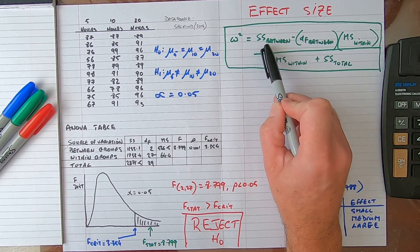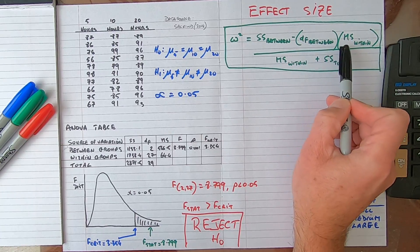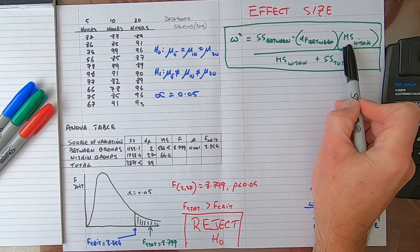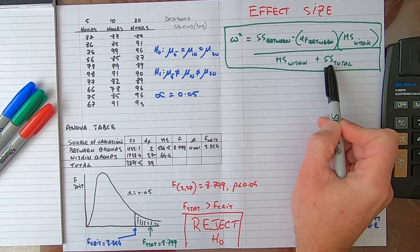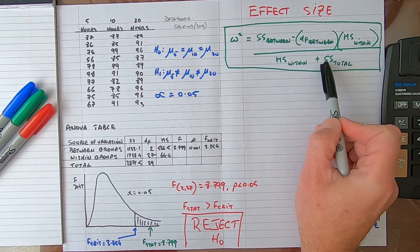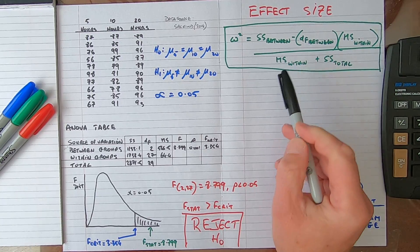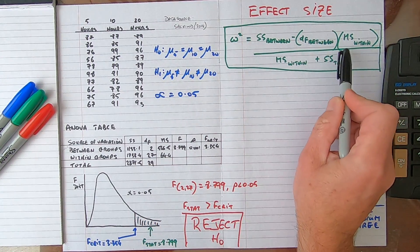The formula for calculating omega squared is a little bit of a mouthful but let's go through it. It's equal to the sum of squares between minus the degrees of freedom between multiplied by the mean square within, that's all divided by the mean square within again plus the sum of squares total. That is a bit of a mouthful; there are five ingredients in this formula, and the good news is they all can be derived from the ANOVA table.